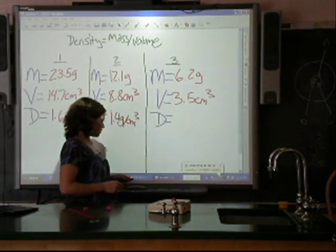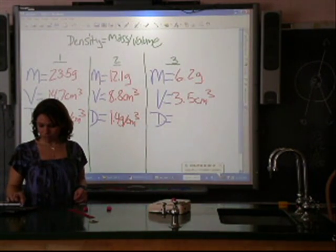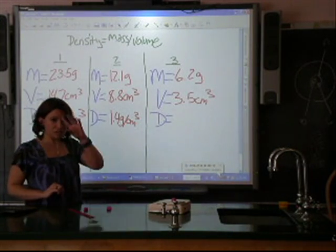Again, I repeat the process, dividing the mass by the volume, so 6.2 divided by 3.5. My answer is about 1.8.